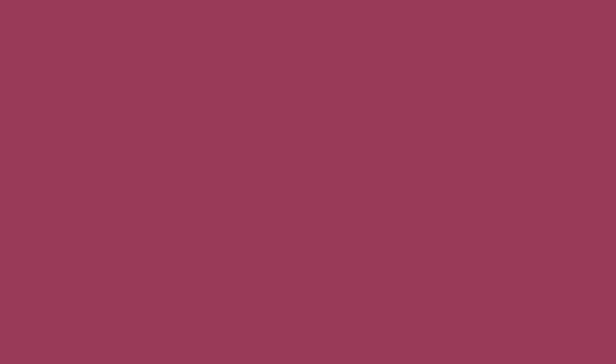For instance, I have access to the Internet and the World Wide Web right in the palm of my hand. The Internet is a global system of interconnected computer networks used to communicate between devices and other networks. In other words, the Internet is a network of networks that consists of public, private, academic, business, and government networks.